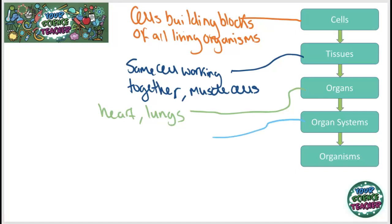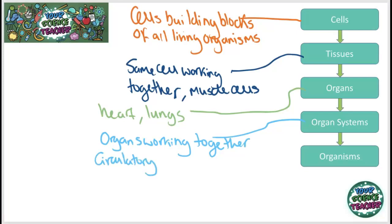An organ is different cells and different tissues working together for one function. When we have organs working together, these make organ systems. An example of an organ system would be the circulatory system, which is how we get blood around the body, how it becomes oxygenated, and passes through your lungs and heart. When we have enough organ systems we have an organism — a living being. You are an example of an organism, and so are any plants you have in your house.